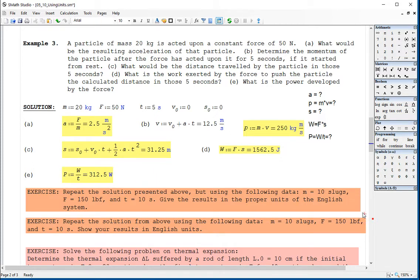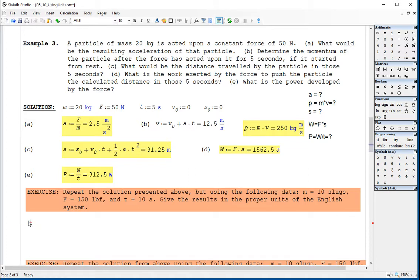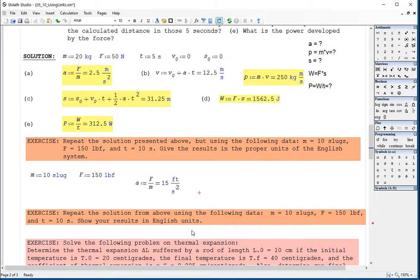They want me to repeat this solution by changing units to the English system. And remember that when we define using units of the English system, say mass quote 10 quote slug, and force colon 150 quote lbf. For example, the acceleration will be f divided by m. But it gives me units of the international system. And if I want units of the English system to be consistent with the solution, I will have to type quote ft divided by quote s squared. And so on. Repeat the solution from above using the mass of 10 slug, f equals 150 pounds, t equals 10 seconds. Well, that exercise is exactly a repetition from the previous one, so let's delete it.